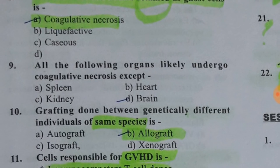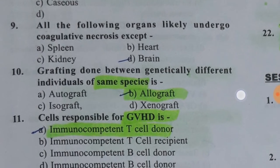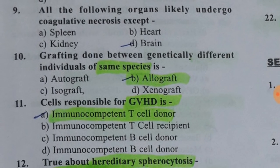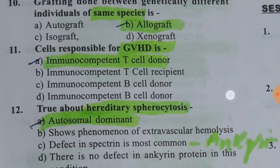All of the following organs are likely to undergo coagulative necrosis except the brain — liquefactive necrosis occurs in the brain. Grafting done between genetically different individuals of the same species is an allograft. You should also know what a xenograft and isograft are. The cell responsible for graft versus host reaction is the immunocompetent T cell of the donor.